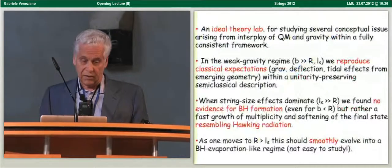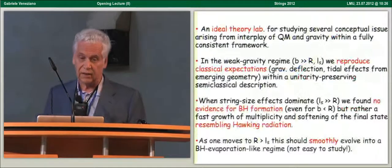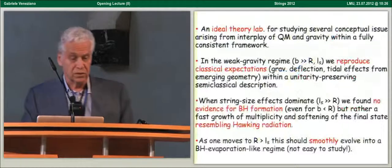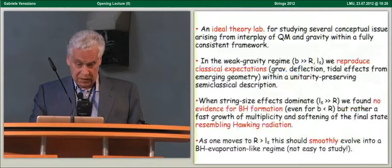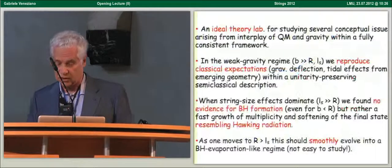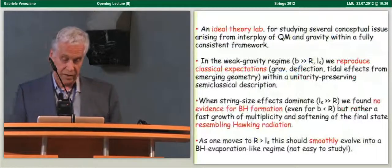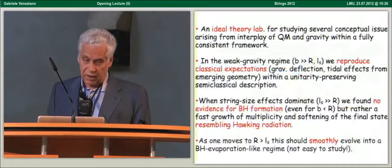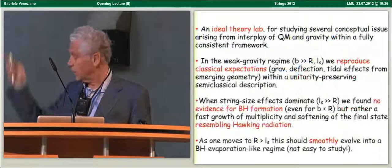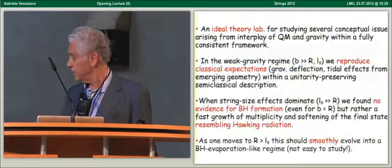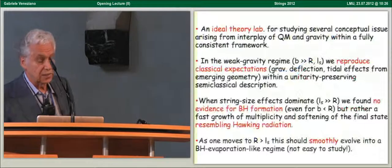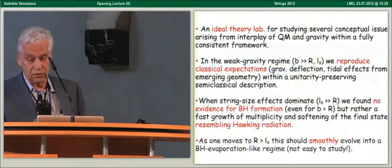Now, this looked to us from the start an ideal lab for studying several conceptual issues arising from the interplay of quantum mechanics and gravity within a fully consistent framework provided by superstring theory. Indeed, in the weak gravity regime, which is region one in the previous graph, big impact parameters, we can reproduce classical expectations like the gravitational deflection, tidal effects from the emerging geometry.